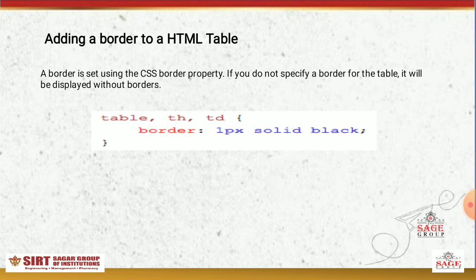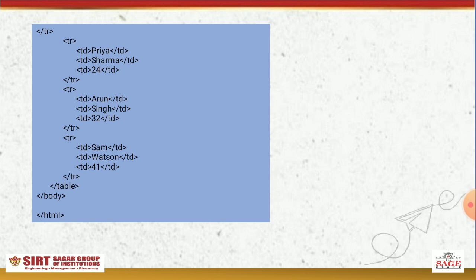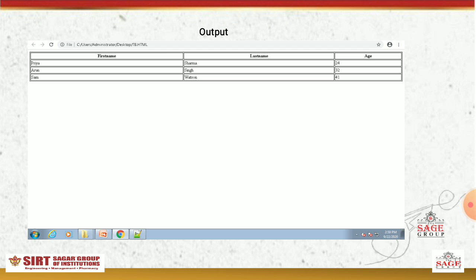Adding a border to an HTML table: a border is set using the CSS border property. If you do not specify a border for the table, it will be displayed without borders. In the head section's style block, we declare the table, th, and td border as 1 pixel solid black. In the body we declare a table with width 100%, with rows containing First Name, Last Name, Age, and data rows: Priya Sharma 28, Arun Singh 32, Sam 48. This is our output with border.